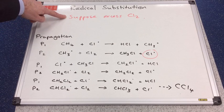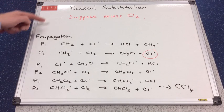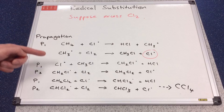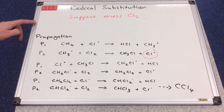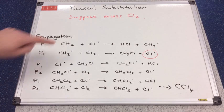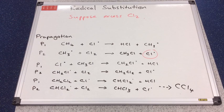So if chlorine is in excess, we get these further substitutions. If you want to prevent that, you make sure that the methane is in excess.